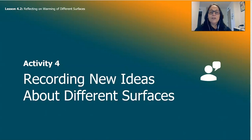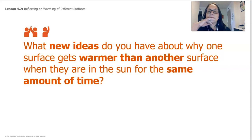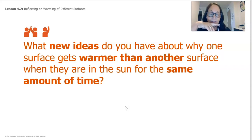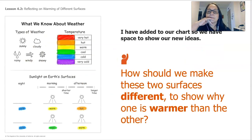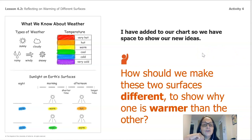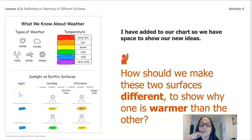Recording new ideas about different surfaces: what new ideas do you have about why one surface gets warmer than another when they are in the sun for the same amount of time? You can draw this on a piece of paper with the results of your outdoor activity. Here is a chart — I've added information so we have space to show our new ideas about how to make these two surfaces different to show why one is warmer than the other.